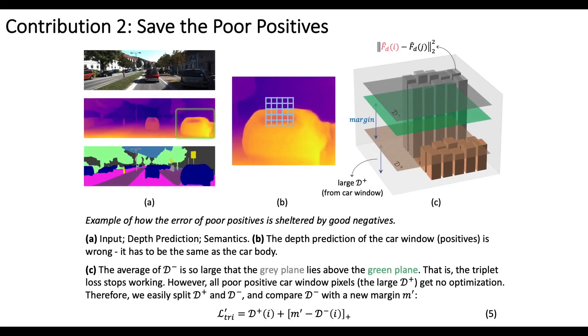Then, we would like to show the second drawback of the original triplet loss. Sometimes, the error of the poor positives could be sheltered by good negatives. Let's take a look at the shown case. In figure B, the depth estimation of the car window is wrong. It has to be the same as the car body, but in fact, it doesn't.